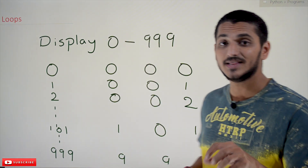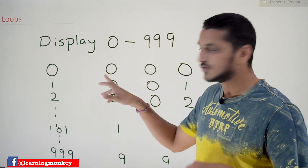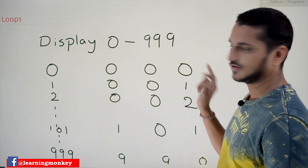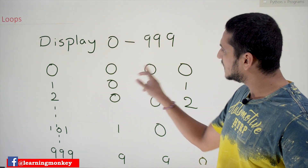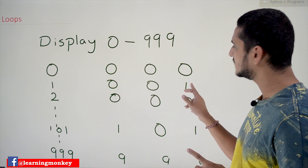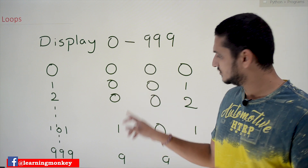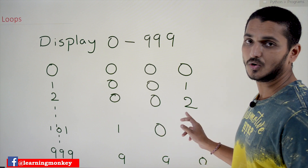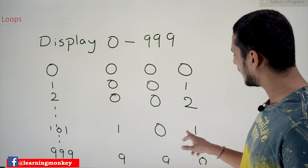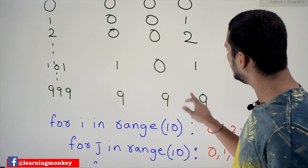Coming to our example: we have to display the numbers from 0 to 999, but we have to display it like this — 0 is written in three digits: 0 tab space 0 tab space 0. 1 will be displayed as 0 tab space 0 tab space 1, and so on. If you want to display 10: 0 tab space 1 tab space 0. 101 is displayed as 1 tab space 0 tab space 1, and so on up to 9 tab space 9 tab space 9.